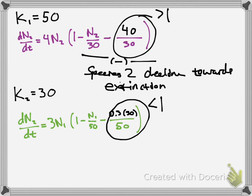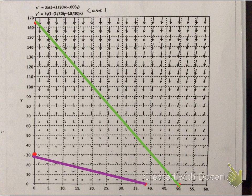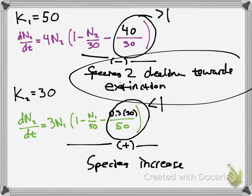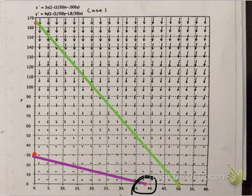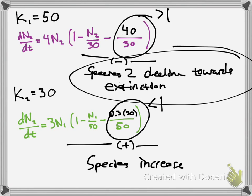So if the number is positive, since this is positive, then species one will continue to increase. And that's shown how this one, or how species two here declined towards extinction. That's shown here. So pretty much this species will increase or survive longer, pretty much survive.